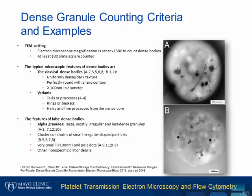Not every opaque object on whole-mount TEM is a dense granule. In collaboration with Dr. White, we first presented our dense granule counting criteria at the 2013 annual meeting of the American Society of Hematology. Dense granules should have uniformly dark texture, perfectly round and sharp contour, and greater than 100 nm in diameter. Larger, pale, and frequently irregularly shaped granules are likely alpha granules. Background chains and other non-specific opaque bodies should not be counted as dense granules.